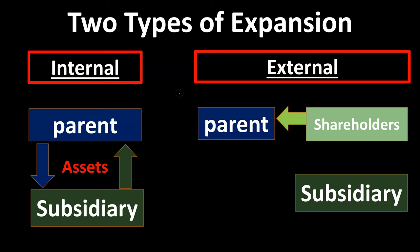External expansion is the case where we have two entities, two companies or organizations that will merge or combine in some way. The most straightforward concept is the parent company purchasing shares from the shareholders of the subsidiary. If they get a controlling interest — typically over 50% of those shares — you're left with a parent-subsidiary type of relationship.